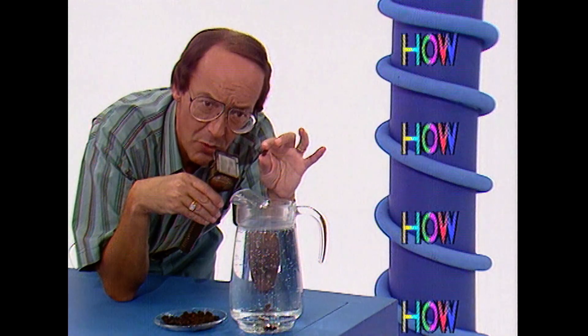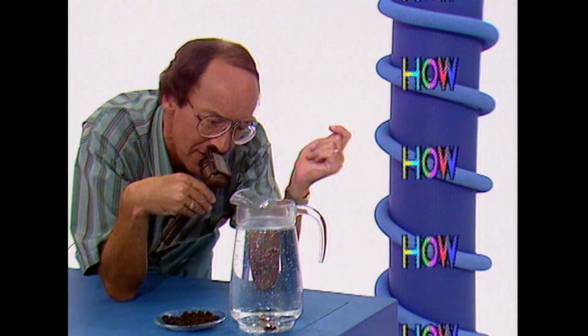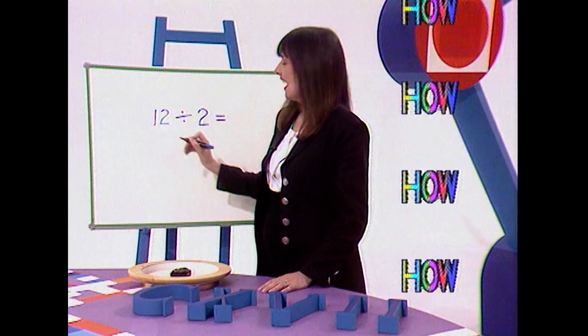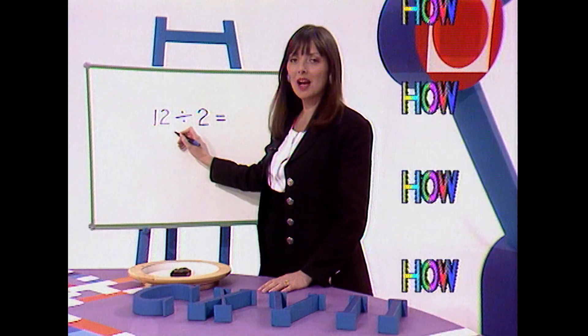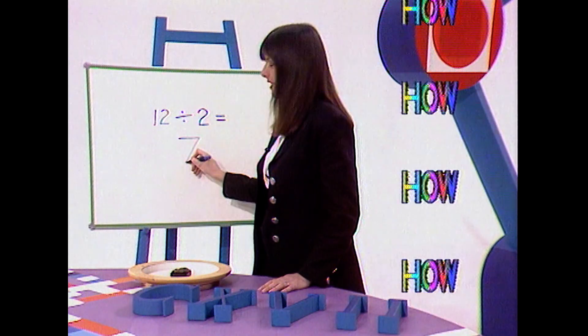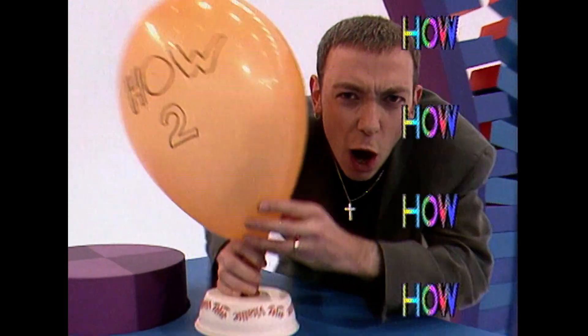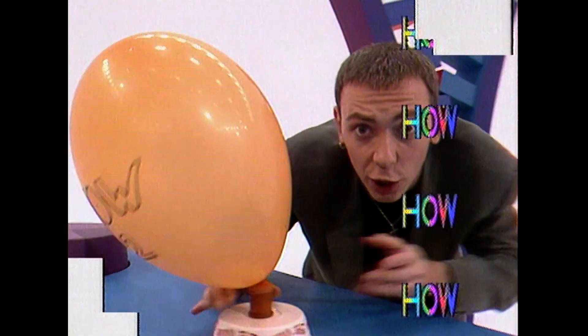How do you race raisins? They're under starter's orders, and they're off. How can 12 divided by 2 equal 7? And how does a hovercraft work?